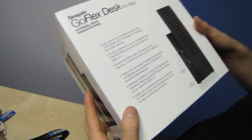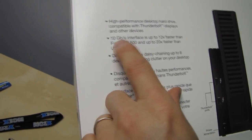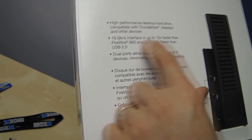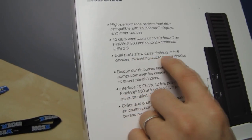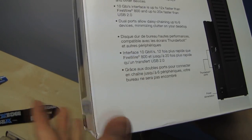Okay, durable soft touch finish. High-performance desktop hard drive compatible with Thunderbolt displays and other devices. 10 gigabit per second interface is up to 12 times faster than Firewire 800. Dual ports allowing daisy chaining up to six devices, minimizing clutter on your desktop.